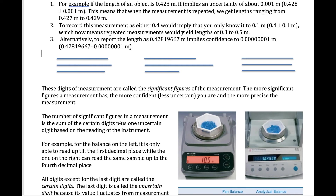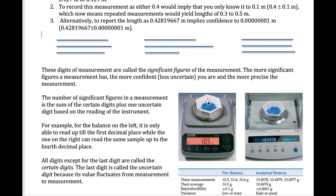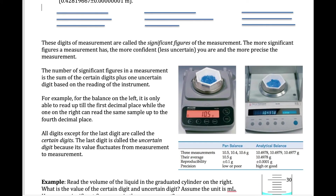The more significant figures you have, the more precise your measurement is. For example, the same solid copper sample placed on two different balances gives 10.5 grams on one and 10.4978 grams on the other. The right balance is more precise because it has more digits — its uncertainty is plus or minus 0.0001, compared to plus or minus 0.1 for the less precise balance.